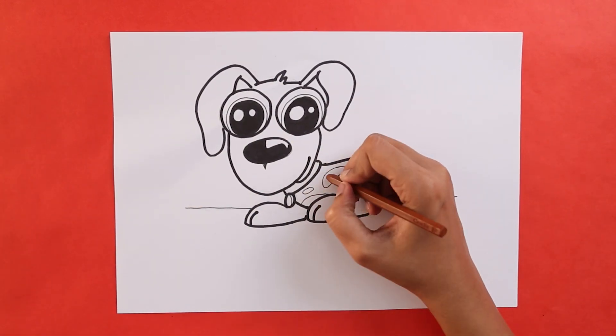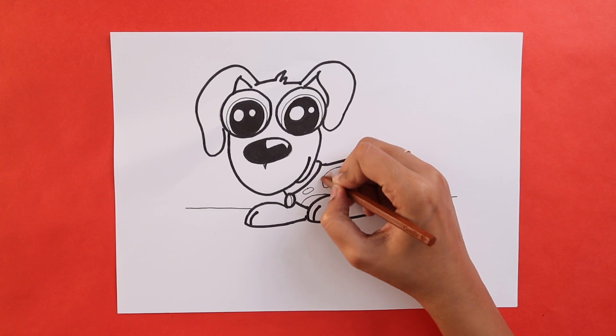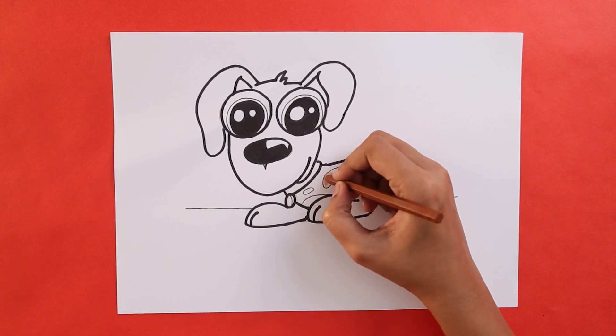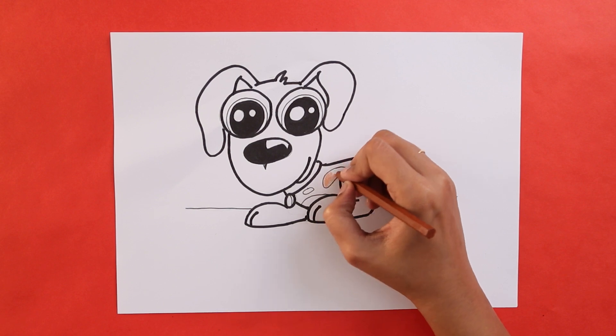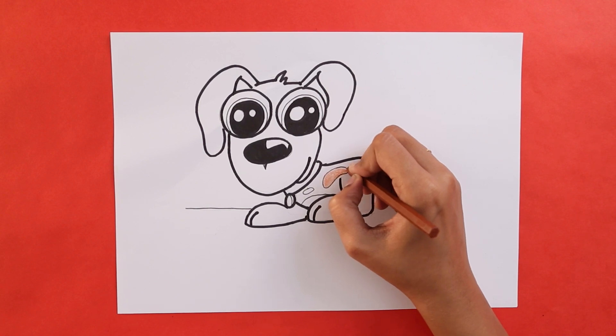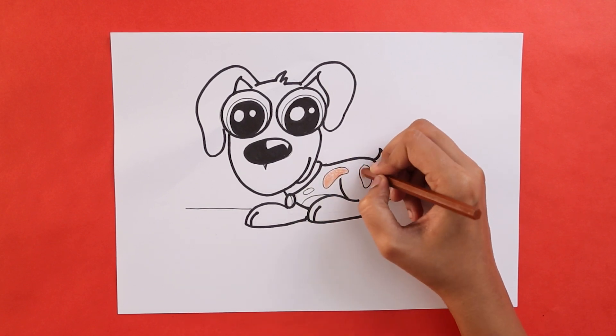Are you all done? Now for the fun part. You can now grab your crayons as it's time for coloring. We'll start off by using the color brown. With the brown color, we'll color the patch that we drew inside the body.